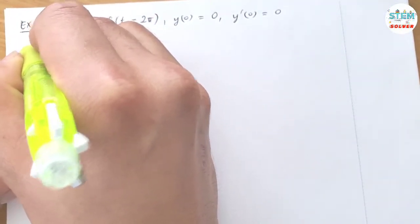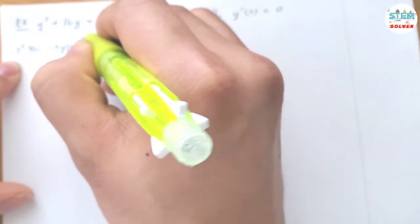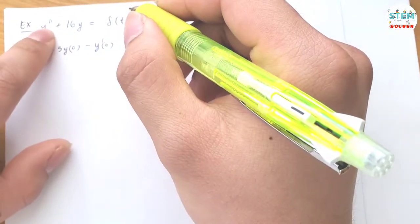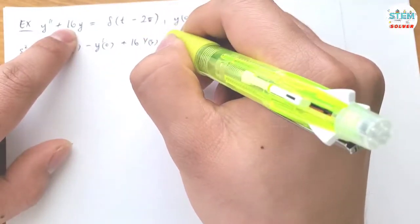I have s squared times capital Y of s minus s times y of 0 minus y prime of 0 plus 16 times capital Y of s equals,